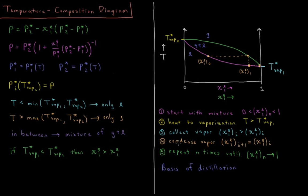We're going to condense that vapor back down into liquid, which is now more enriched with component 1 — this is χ1L step 1. Then we're going to take that and heat it up again, and it's going to boil, and we'll collect the vapor which is now even further enriched with component 1, about 98%. We condense that liquid and then repeat n times until we have a sufficiently high mole fraction of component 1, or until it approaches a pure solution of the more volatile component.